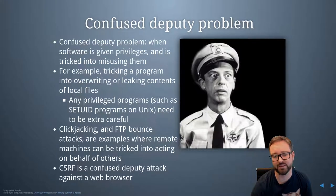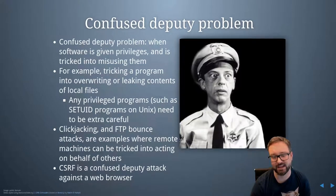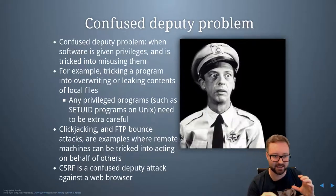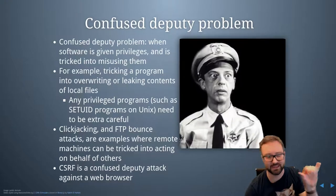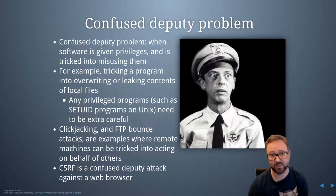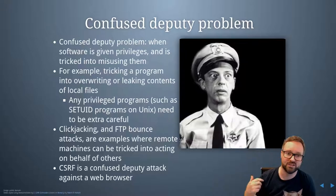Another example of the confused deputy problem is clickjacking. FTP bounce attacks are examples where remote machines can be tricked into acting on behalf of others. That is also the case with cross-site request forgery, which is a confused deputy attack against a web browser. The web browser doesn't know the difference between the user clicking a link and an image tag with that same link as a source, initiated from the user visiting a website. Either way, that action is initiated and it misuses the privileges assigned to the web browser as a whole, because the web browser will send cookies for every single GET request that gets made.